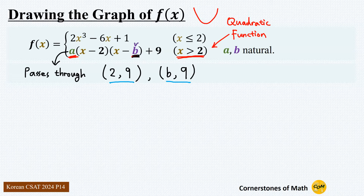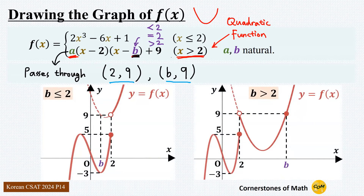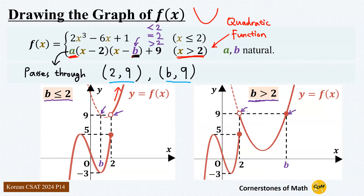Now b can have a value less than 2, exactly 2, or greater than 2. Depending on the value of b, we obtain two different figures for the entire graph of f(x). When b is less than or equal to 2, then (b, 9) is on the left side of (2, 9), so we only have the increasing part of the parabola. When b is greater than 2, then (b, 9) is on the right side of (2, 9), so we have both decreasing and increasing parts of the parabola.